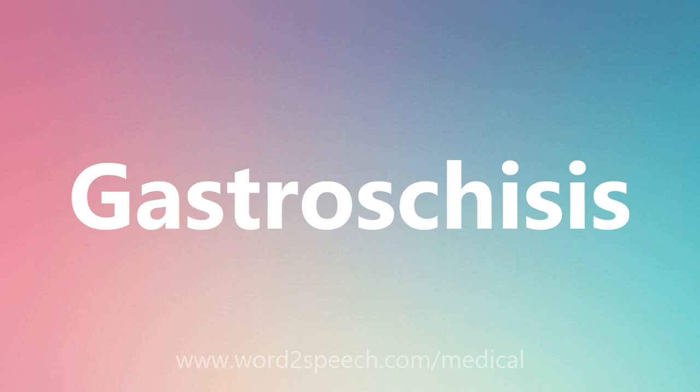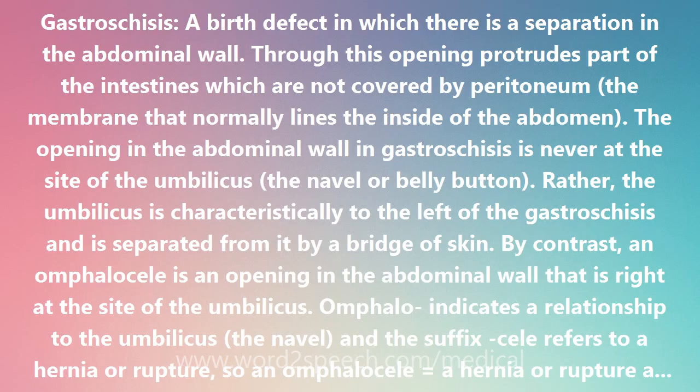Gastroschisis is a birth defect in which there is a separation in the abdominal wall. Through this opening protrudes part of the intestines, which are not covered by peritoneum — the membrane that normally lines the inside of the abdomen.